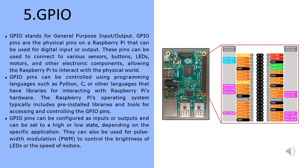GPIO pins can be controlled using programming languages such as Python, C, or other languages that have libraries for interacting with Raspberry Pi's hardware. The Raspberry Pi's operating system typically includes pre-installed libraries and tools for accessing and controlling the GPIO pins. GPIO pins can be configured as inputs or outputs and set to high or low state. They can also be used for pulse width modulation to control the brightness of LEDs or the speed of motors.